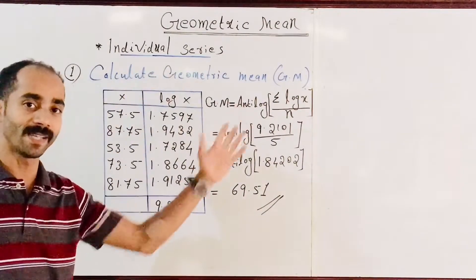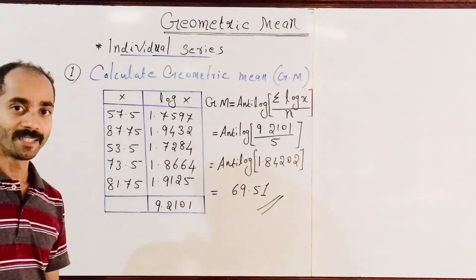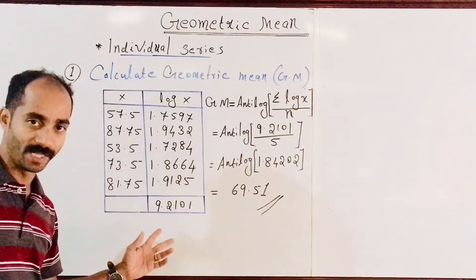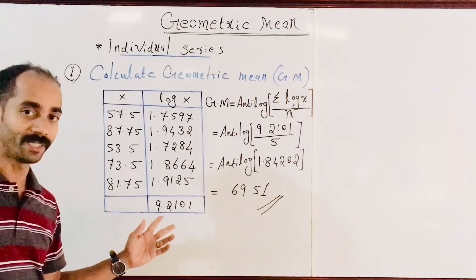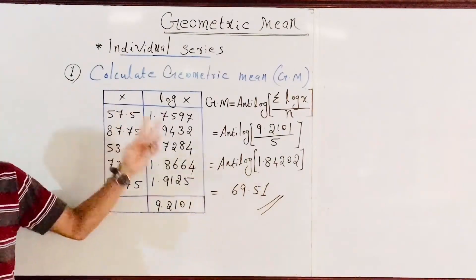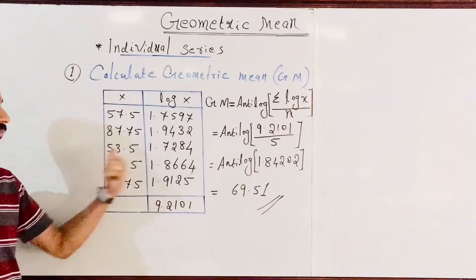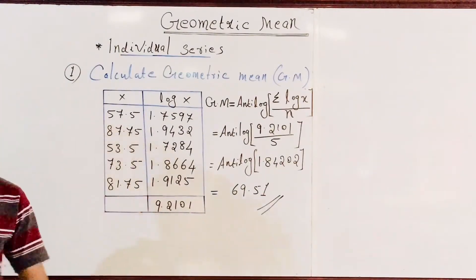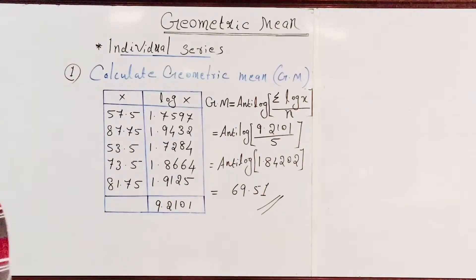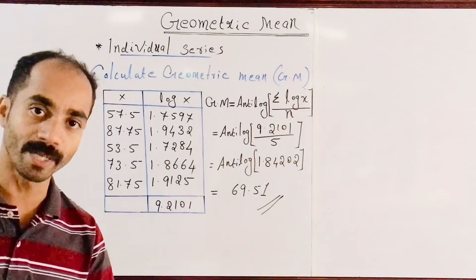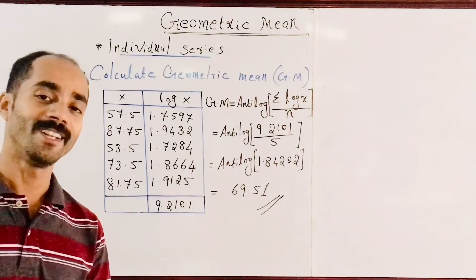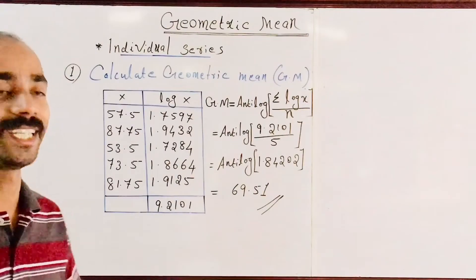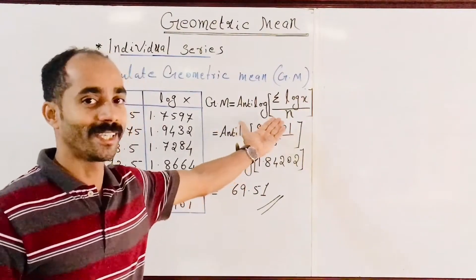Geometric mean for an individual series — we are going to try an example. The x values in the series are: 57.5, 87.75, 53.5, 73.5, and 81.75. This is 5 numbers. We will find the geometric mean using the formula GM = antilog of (Σ log x / n).